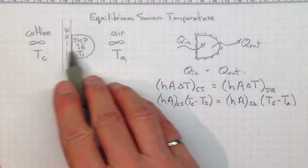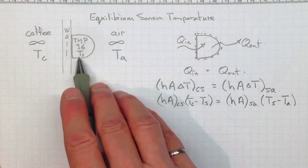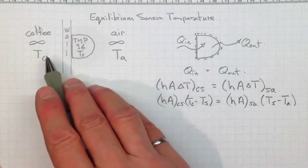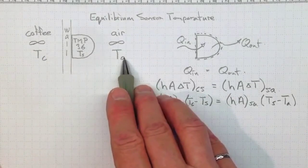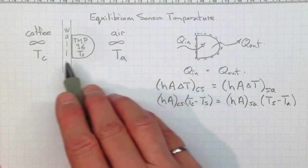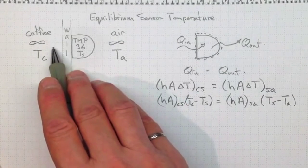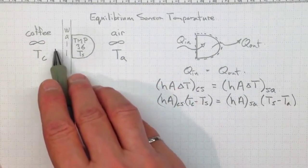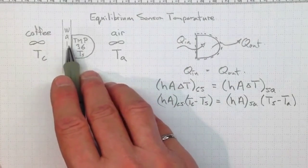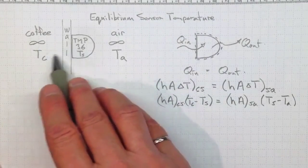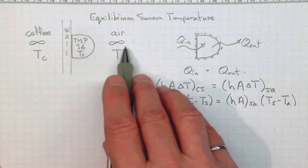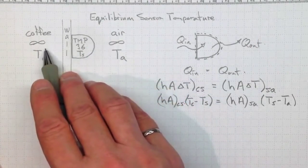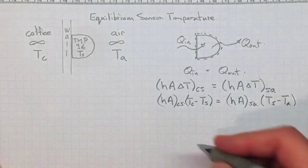Now we know from a practical standpoint from observations that the temperature of this sensor is going to be somewhere between the coffee temperature and the air temperature. And it turns out that it's going to be a weighted average depending on which side is better at transferring heat. So if the coffee and the wall are better at transferring heat into the sensor than the air is at transferring heat out of the sensor, then we'll be closer to the coffee temperature.